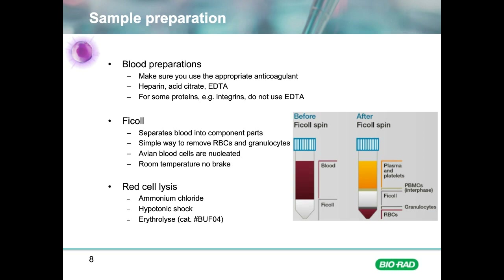Platelets are found in the plasma layer. The second method to remove red cells is to use hypertonic lysis, which allows you to remove red cells whilst preserving all other populations in your sample. Methods include using water, ammonium chloride, or specialized red cell lysis solutions such as Erythrolyse. With all lysis methods, care must be taken to ensure sufficient lysis of the red cells without leaving them too long in the lysis solution, which will lead to increased cell death.